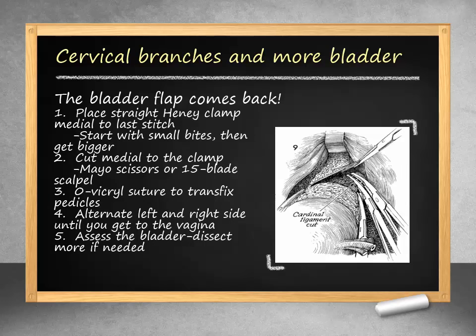We now must isolate and ligate the cervical branches of the uterine artery. This is accomplished with straight Heaney clamps, with placement of each clamp medial to the previous stitch. Once a clamp is placed, you then cut medial to the clamp with either Mayo scissors or a scalpel. Vicryl suture is used to secure the pedicles with placement of the suture at the tip of the clamp and tied behind the clamp. You will alternate with your assistant until you reach the vagina. During this process, continue to check the bladder and mobilize further if needed.